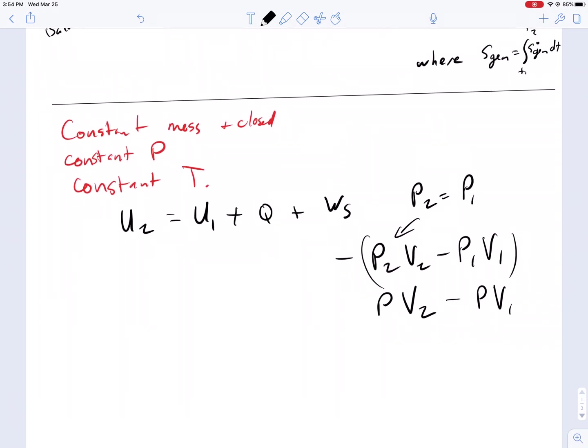Entropy similarly simplifies. We're going to have S2 minus S1 equals Q over T plus the S-gen term.